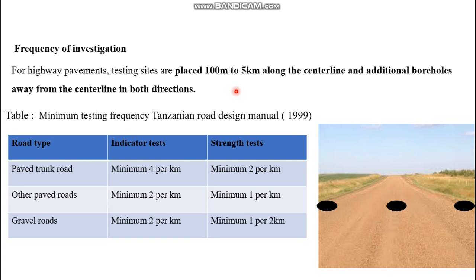Regarding the frequency of investigation — how many test pits or boreholes are sufficient — there is no clearly defined value. If you have uniform soils, a smaller number of test pits is needed, but if the soils are erratic, the frequency can be up to 500-meter intervals. For highway pavement, test sites are placed at intervals of 100 meters up to 5 kilometers along the center line and offset in both directions to the left and right.